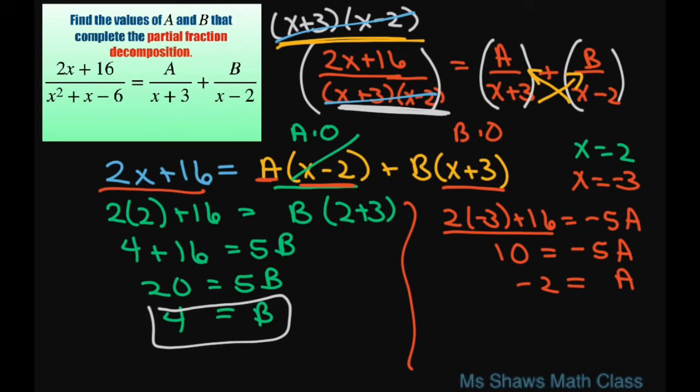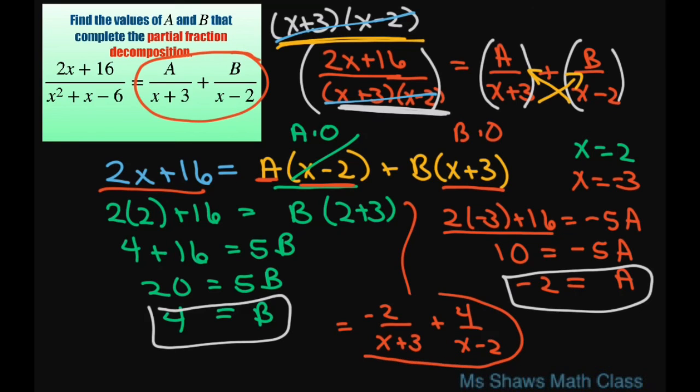So you have your A and B. But technically what you would want to do from here is to substitute it back in. And I'm just going to look at this piece here. So this would equal negative 2 divided by x plus 3 plus 4 divided by x minus 2. Now if you ever simplified this with the common denominator, you'll get this back.